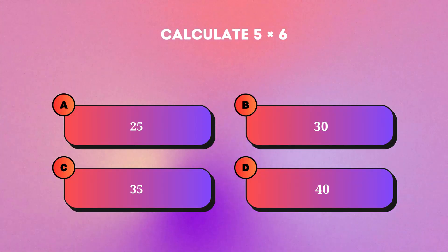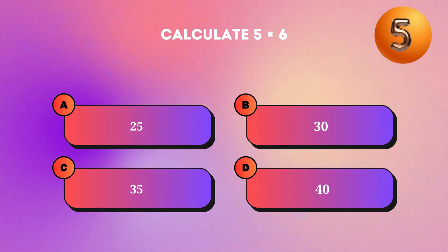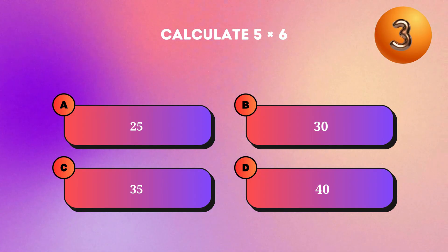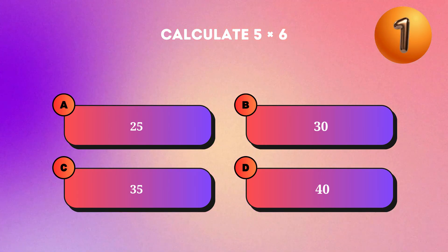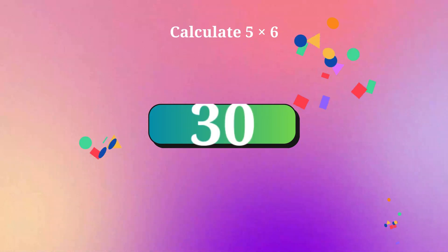Calculate five multiplied by six. Thirty.